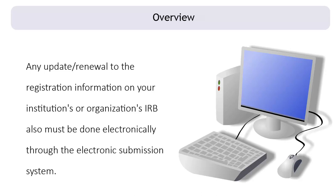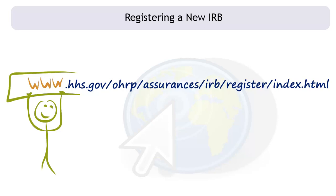At this point, we are going to talk about the process of registering a new IRB. Using this webpage, your organization can register an IRB if it has never been assigned an IORG number by OHRP and never registered an IRB. You can view the instructions for registering a new IRB at www.hhs.gov/ohrp/assurances/irb/register/index.html.